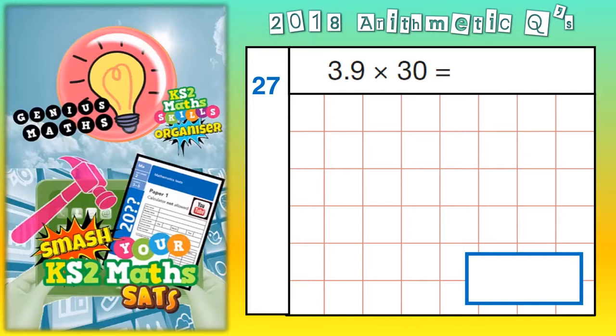Way number one is to ignore the zero and do 3.9 times 3. Well, 3 times 9 is 27. Put the 7 in and carry the 2. And 3 times 3 is 9, plus the 2 is 11.